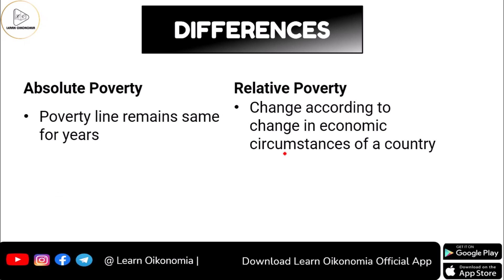In the case of absolute poverty, poverty lines remain the same for years, and unless a recommendation is made by certain committees to change the poverty line, it will remain unchanged for many years. But in the case of relative poverty, this will be changing according to the circumstances of a nation.